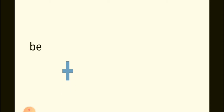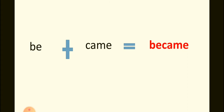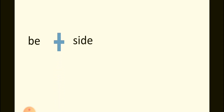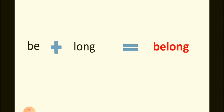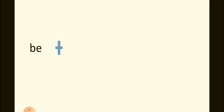Be- prefix examples: B plus came — became. B plus side — beside. B plus long — belong. B plus for — before.